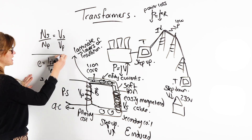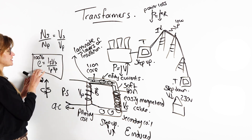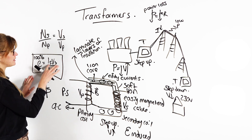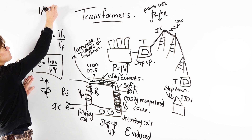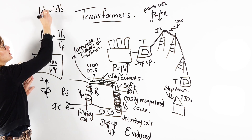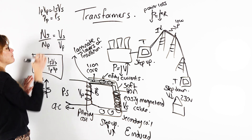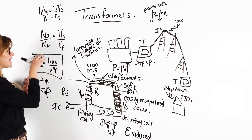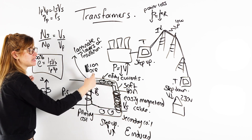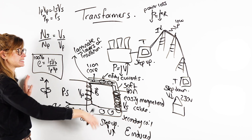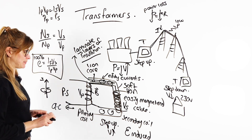The last equation is about efficiency. If our transformer is 100% efficient, then the current in the primary arm times the voltage in the primary arm equals the current in the secondary arm times the voltage in the secondary arm — the power in the primary all goes to the power in the secondary. If it's less than 100% efficient, not all of that power is transmitted into the secondary arm because of the eddy currents created inside the soft iron core. We reduce those by making sure the core is laminated.